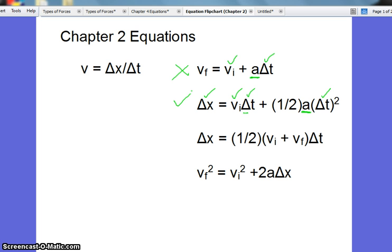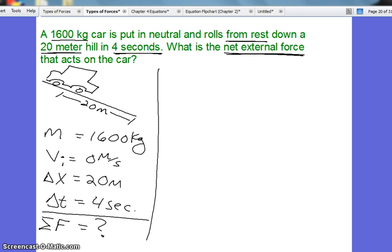We're going to use this one to solve for acceleration and then go back and solve for the net external force. So we'll write down our equation as we see it on our equation sheet. We have delta x to be 20 meters. Vi is 0. Our time is 4 seconds.